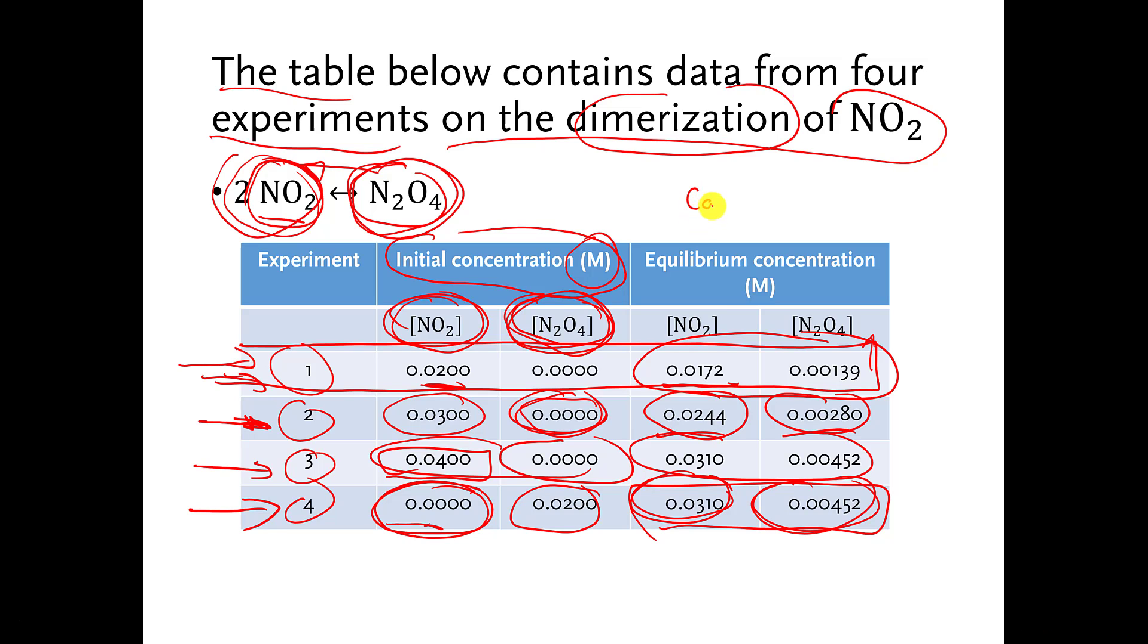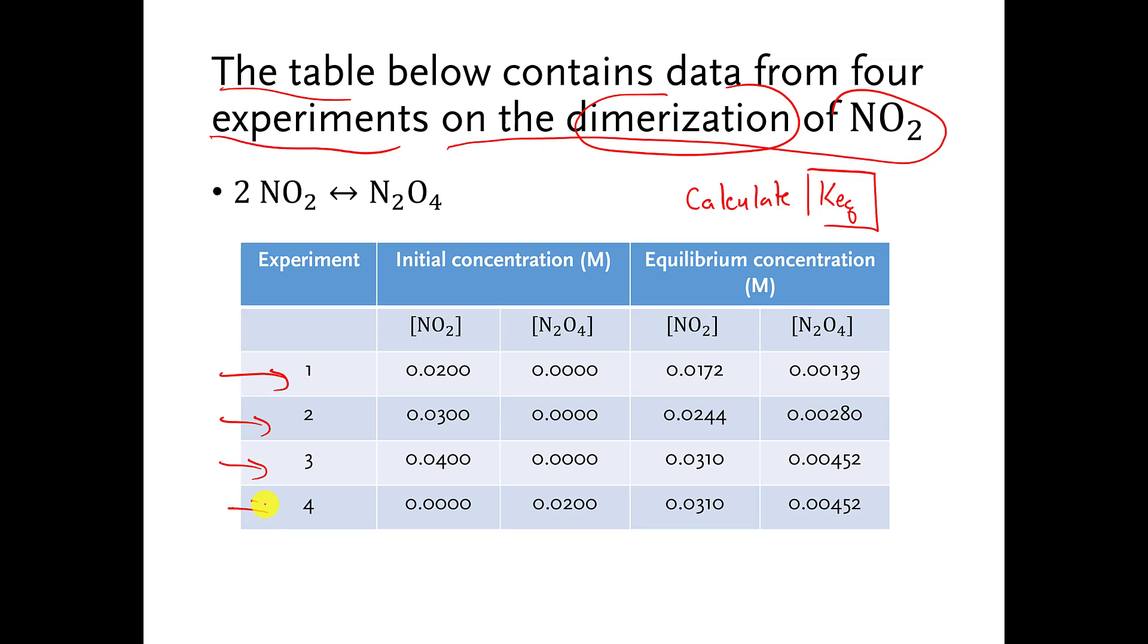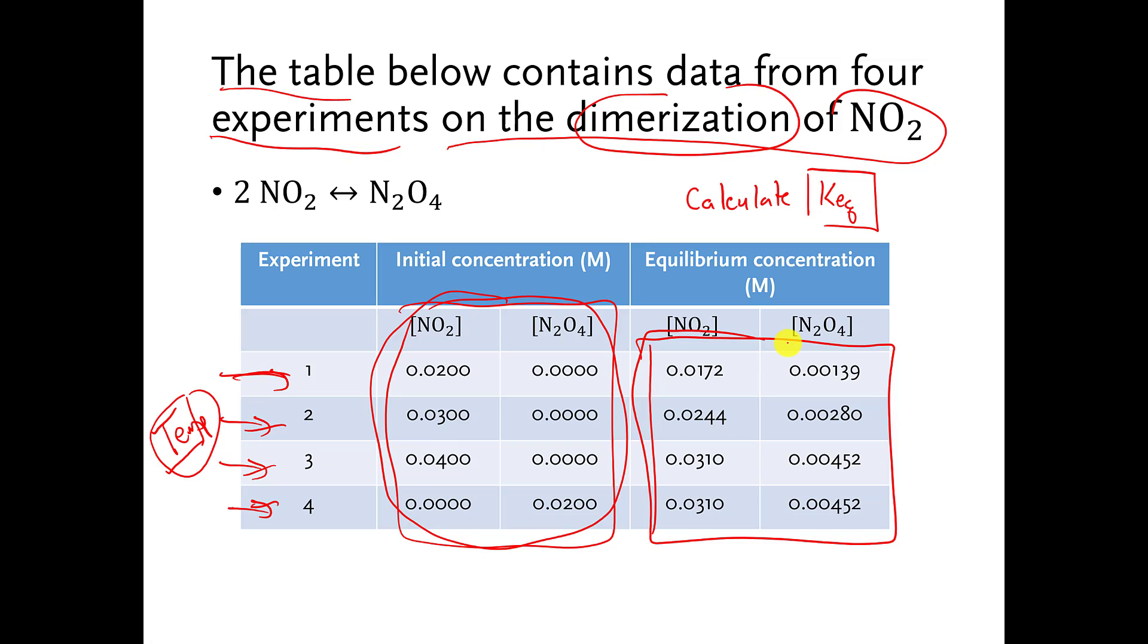What they want you to do, they want you to calculate the equilibrium constant for this chemical reaction under whatever conditions are being tested in experiments 1, 2, 3, and 4. And you're supposed to assume that the conditions in experiments 1, 2, 3, and 4 are identical, except that you start the concentrations of the reactants and products at different amounts for each experiment. But as far as the temperature is concerned, let's say the temperature is the same between experiments 1, 2, 3, and 4. If you do this, you have to use these values to figure out the equilibrium constant.